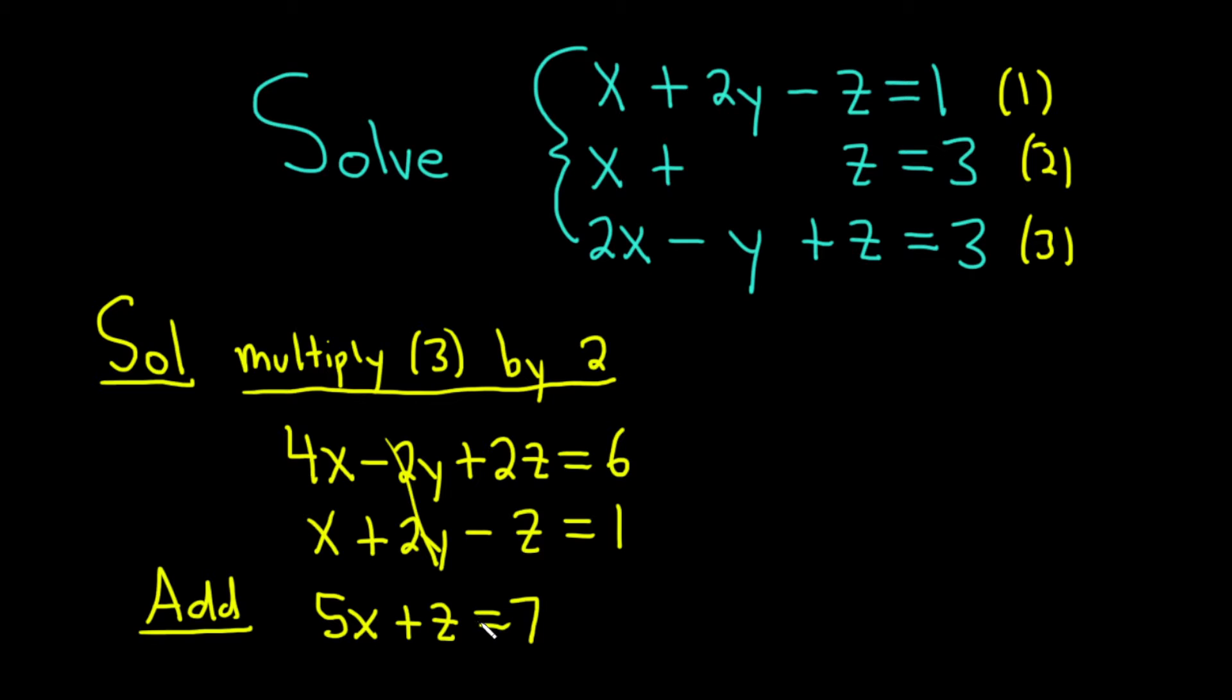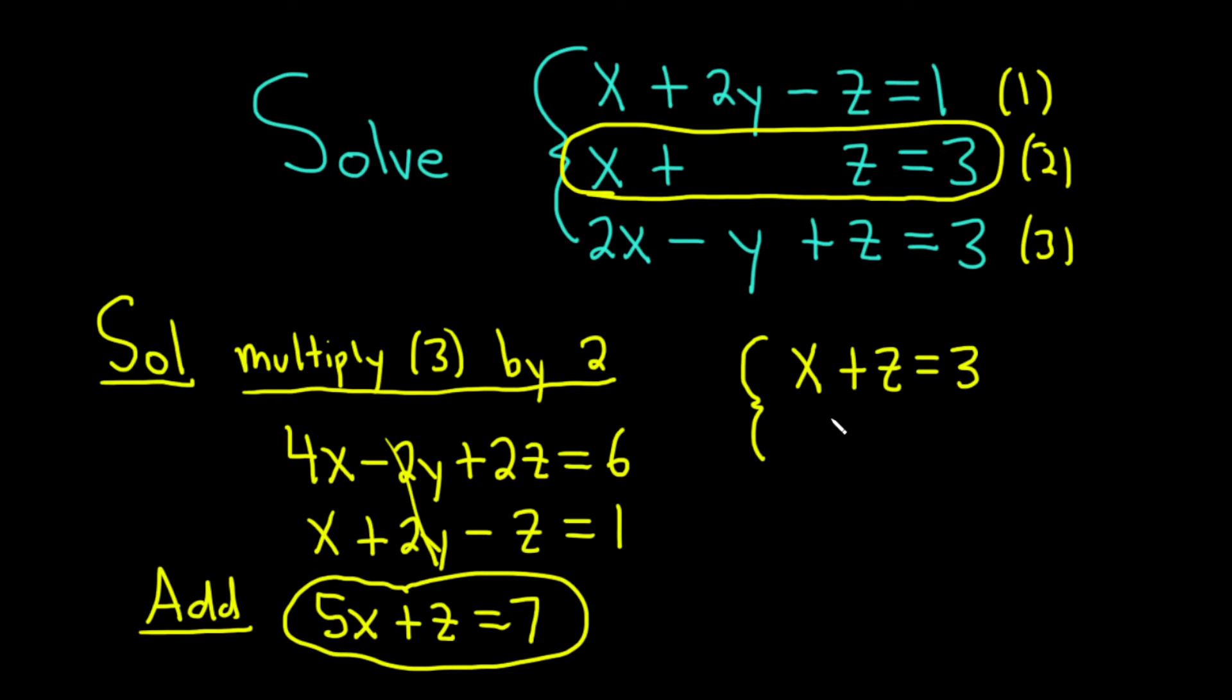So now we have two equations with two variables. We have this one up here, x plus z equals 3. And the one we just created, 5x plus z equals 7. So let's combine those two and keep going. So we have x plus z equals 3. And then we have the equation that we just came up with, 5x plus z equals 7.